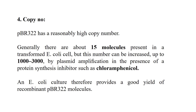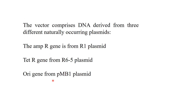pBR322 comprises DNA from three different naturally occurring plasmids, as naturally occurring plasmids do not have all the required features for use as a cloning vector.